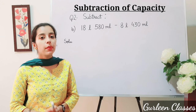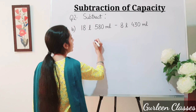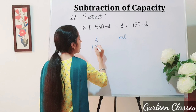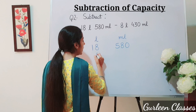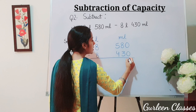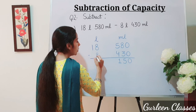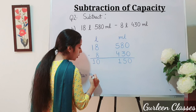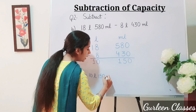Part B: 18 litre 580 milliliter minus 8 litre 430 milliliter. Write litre and milliliter columns: 18 and 580, then 8 and 430. Subtracting: 0 minus 0 is 0; 8 minus 3 is 5; 5 minus 4 is 1; 8 minus 8 is 0; 1 remains as is. Answer: 10 litre and 150 milliliter.